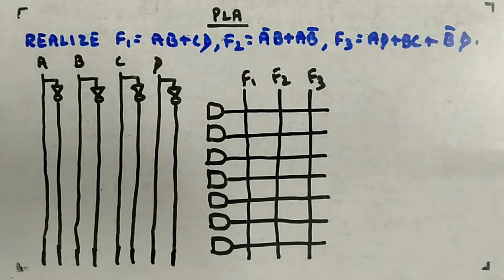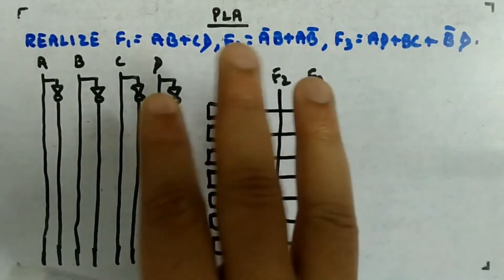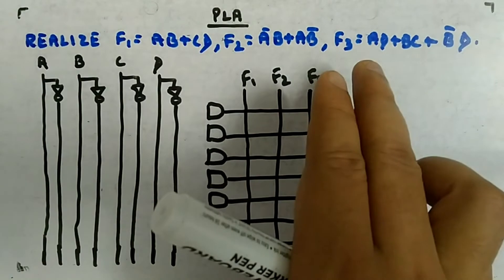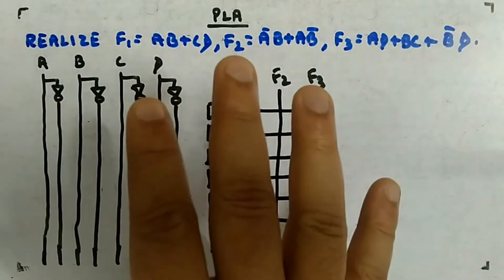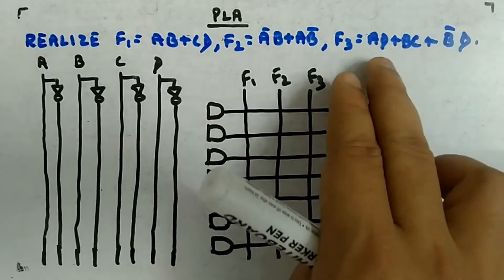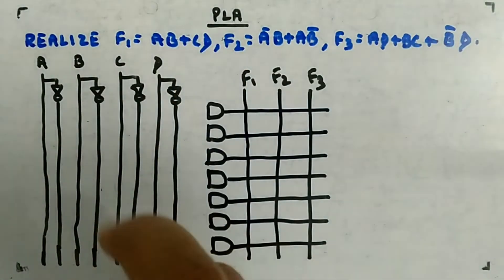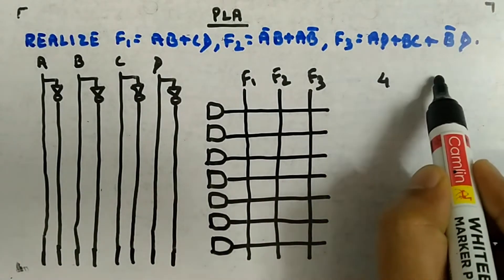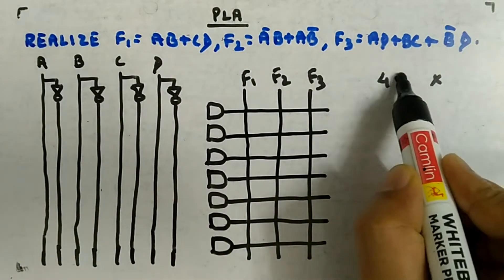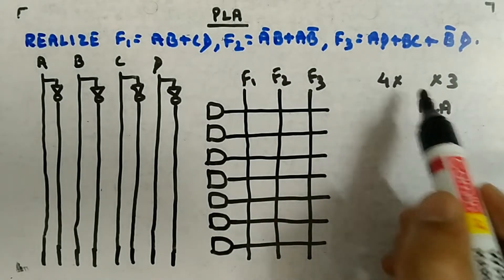Looking at the functions, I can see that I need three outputs: f1, f2, f3. I need four inputs because A, B, C, D are there. You can see A, B, C here, D is there, B is there, C is there, A is there - four inputs. So I am sure I need four input and three output PLA.